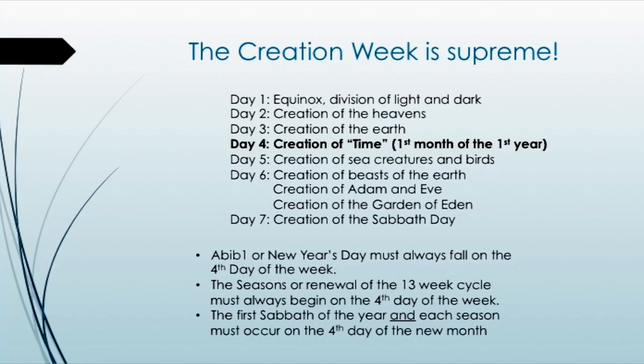If you notice that from the first day of the first month — which is on day 4 of creation — if you count day 4, 5, 6, and 7, you will see that day 7, the seventh day Sabbath, is on the fourth day of the month. In the first cycle of the spring season, in the first month, the first Sabbath day is always on day 4. This is why: in the story of creation, the Sabbath occurred four days after time began.